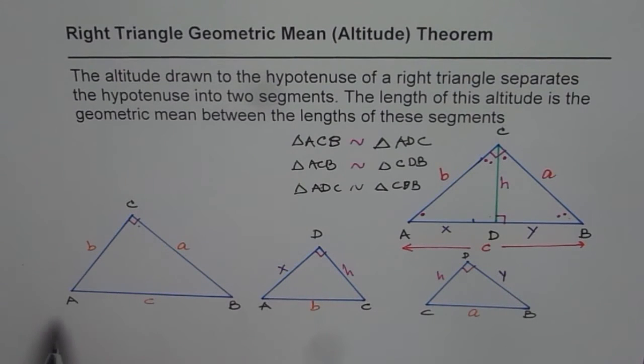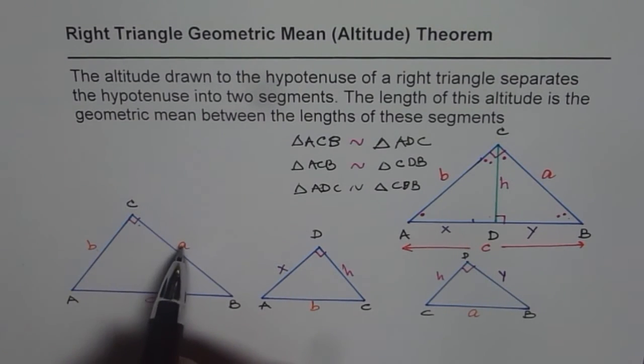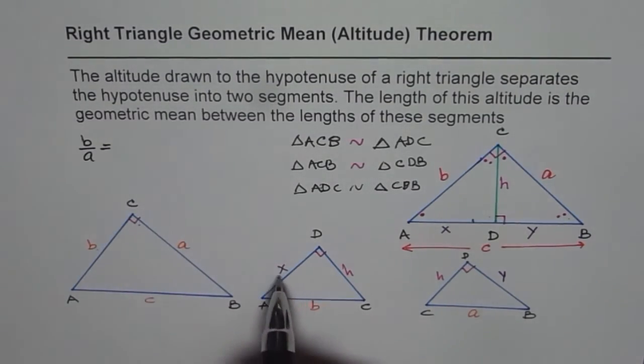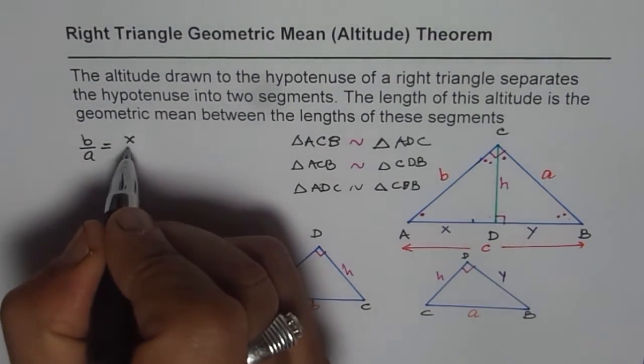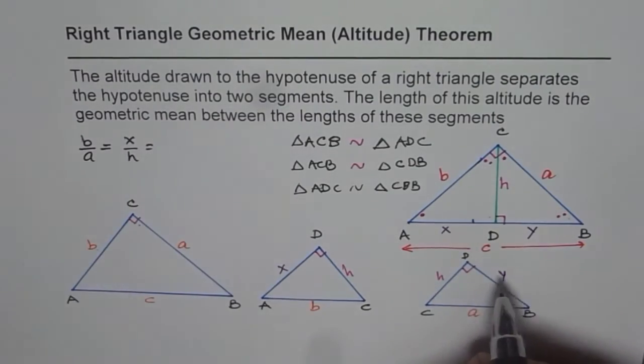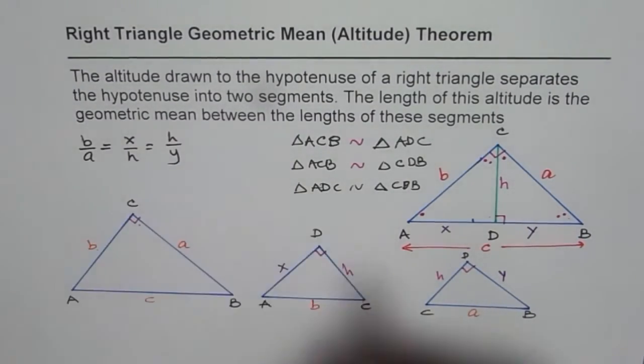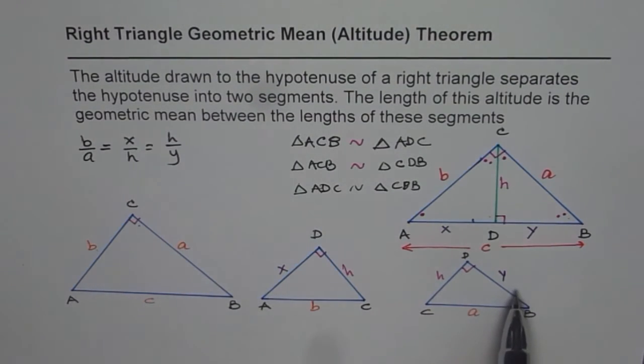So let us compare the ratio of these legs. If you compare the ratio of these legs, what do you see? You see B over A from the first triangle equals X over H, which equals H over Y. So that is the ratio of sides. Since the triangles are similar, they should be exactly the same.